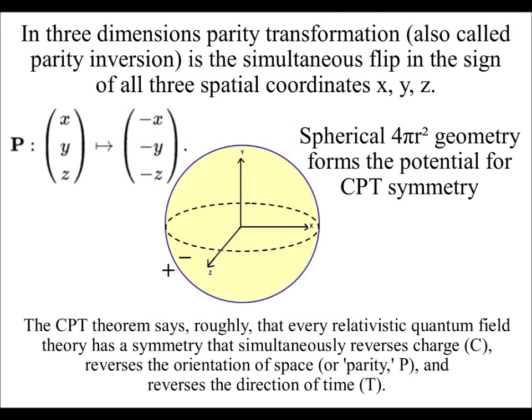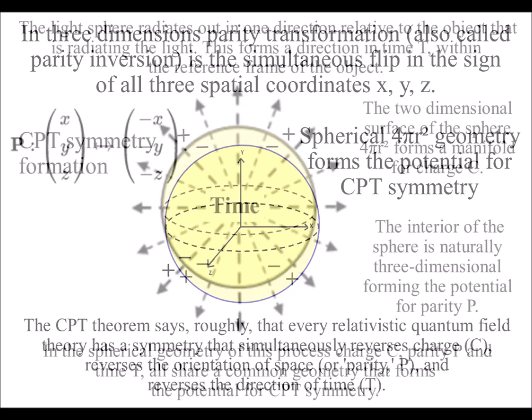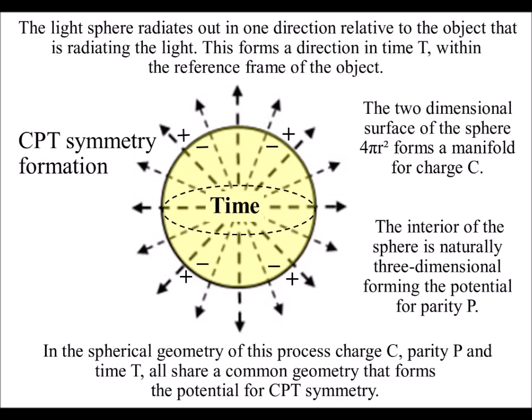Therefore, we have the speed of light squared. We have the charge of the electron squared and the probability of the wave function squared. The interior of the sphere is naturally three dimensional, forming our three dimensional space of everyday life.